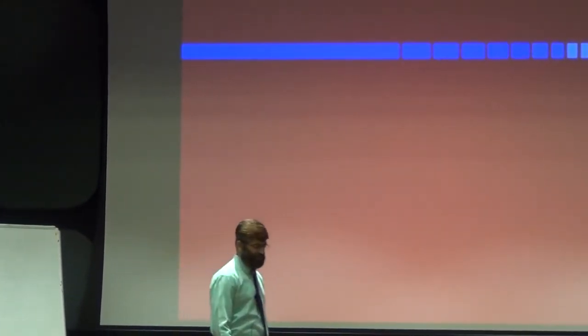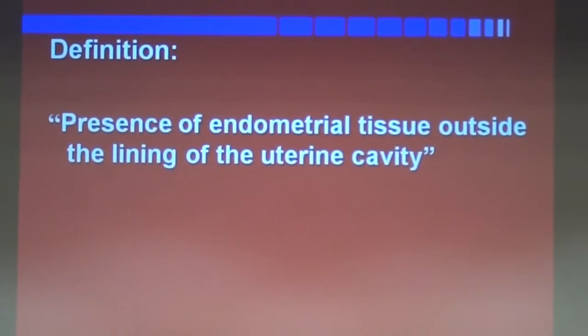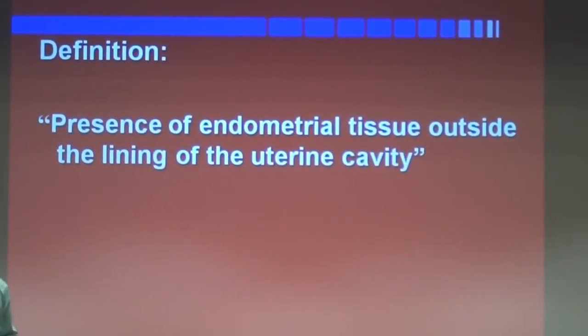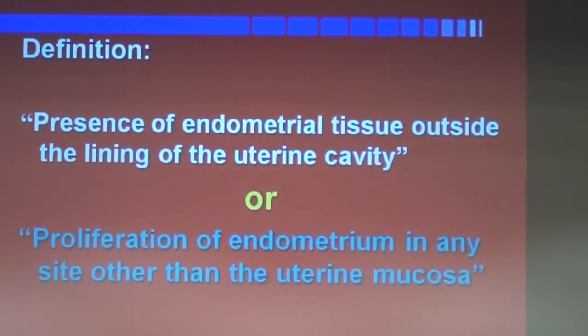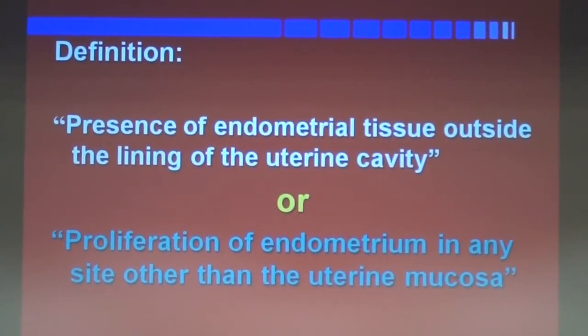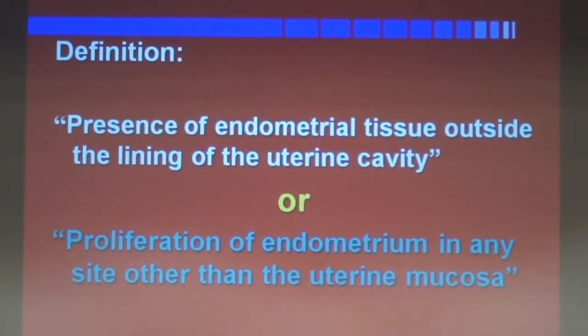First and foremost, what is endometriosis? Endometriosis can be defined as a condition characterized by presence of tissue having characteristics like the functional endometrium at any site other than the uterine cavity. It can also be defined as the presence of endometrial tissue outside the lining of the uterine cavity, or as proliferation of endometrium in any site other than the uterine mucosa.